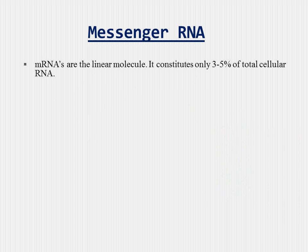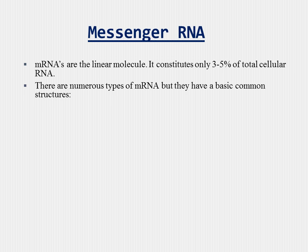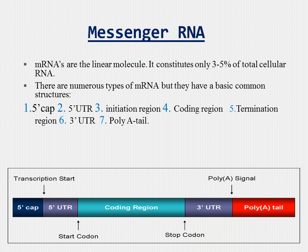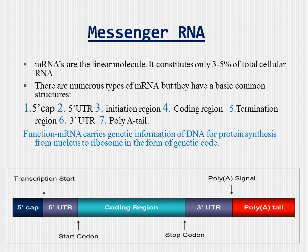Messenger RNA. Jacob and Bonnard in 1961 proposed the name mRNA. mRNA is a linear molecule and consists of only 3 to 5% of total cellular RNA. There are numerous types of mRNA, but they share a common structure which includes a 5' cap — a structure that blocks the action of RNA exonuclease and phosphatase — followed by a 5' UTR or untranslated region, an initiation region, a coding region, a termination region, 3' UTR, and a poly-A tail. The function of mRNA is to carry genetic information from DNA for protein synthesis, from the nucleus to the ribosome, in the form of a genetic code.